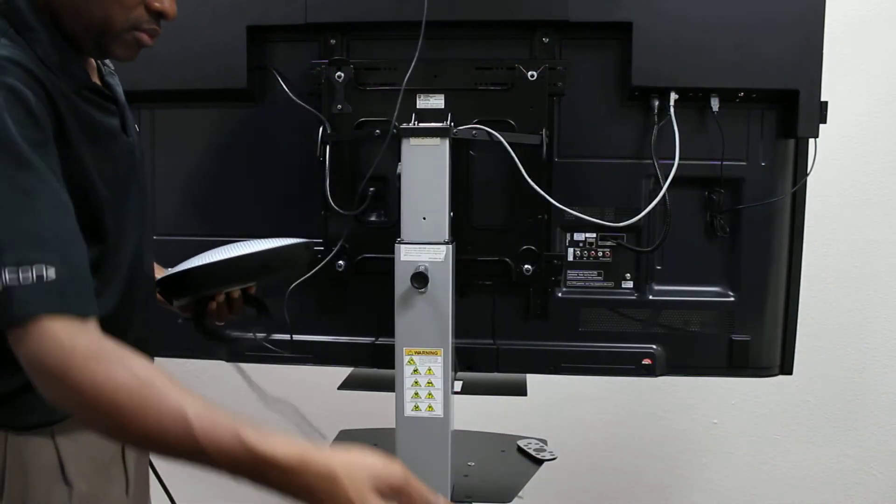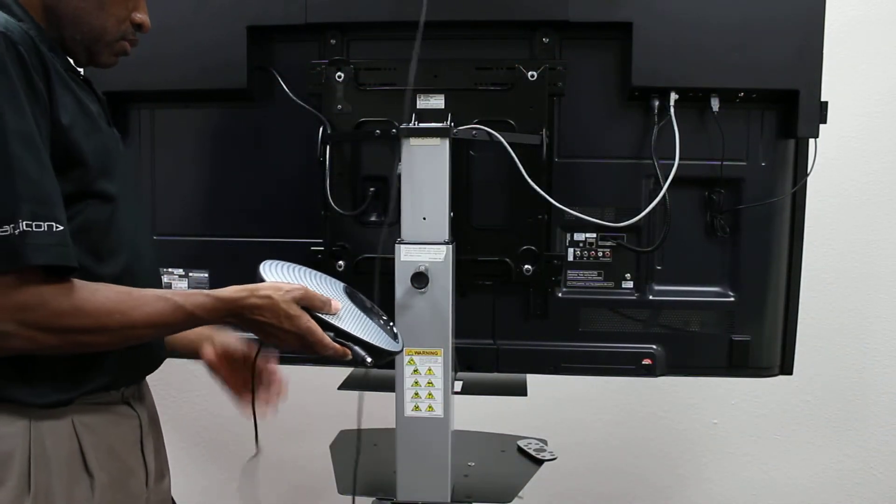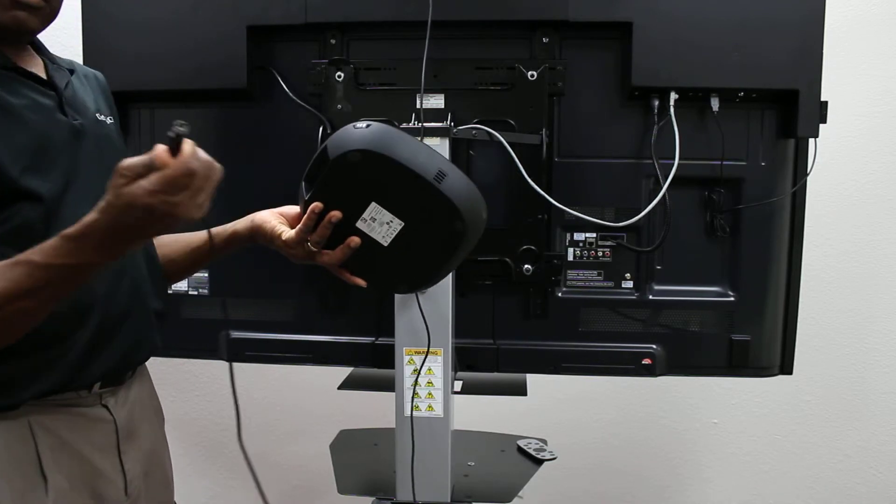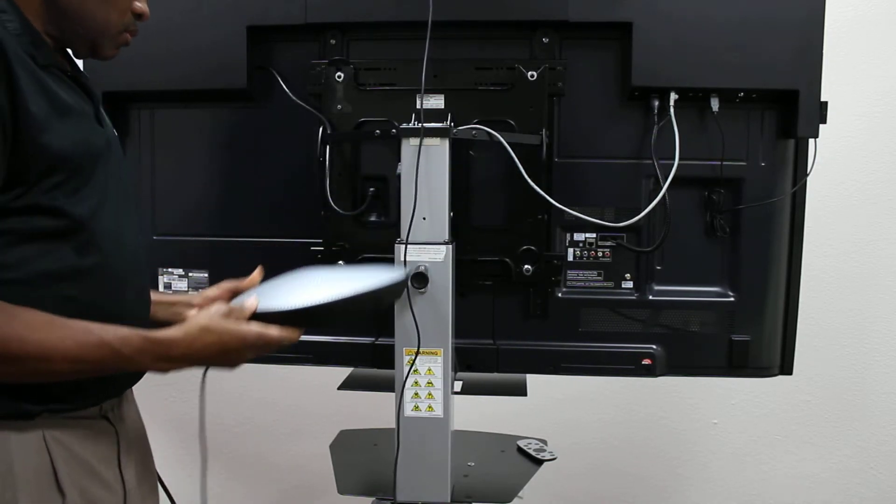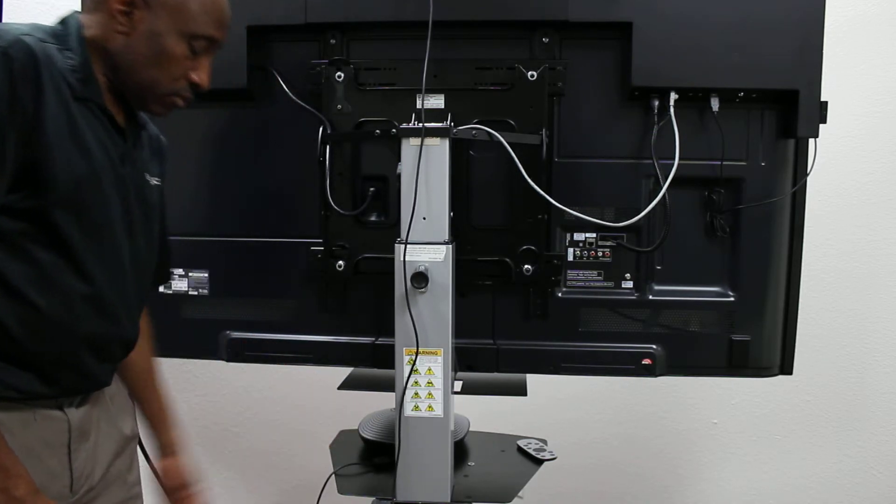The microphone speaker pod is found in the camera box. This only requires one cable connection. He's going to plug it directly into the back of the microphone speaker pod, and then he can either place it directly here on the tray for the cart.